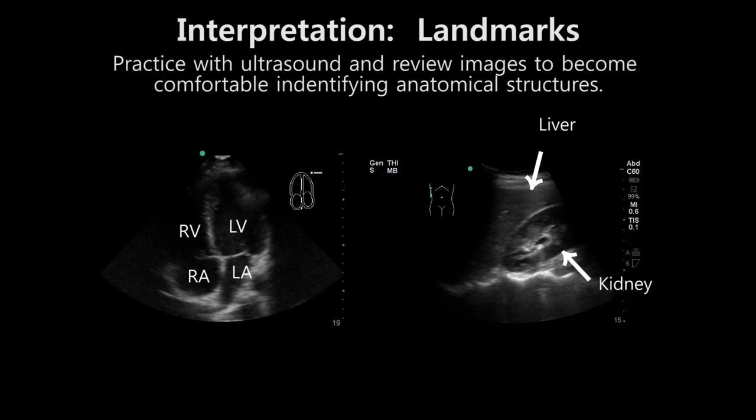The ultrasonographer must have a competent understanding of anatomy in order to obtain usable images. When first learning to interpret images, look for structures that are easily recognizable, which can allow for deduction of surrounding structures. Practicing on standardized patients and healthy models will help you learn normal anatomy so that abnormal anatomy will be more easily recognized in real patients. Understanding the protocol of different scans will help with the recognition of specific views and direct attention to what structures or potential findings are being investigated.